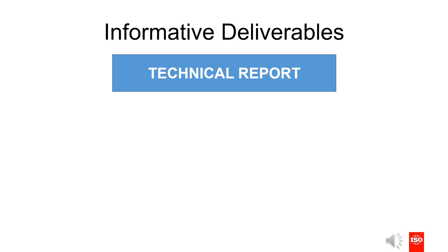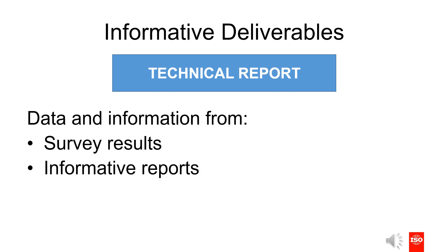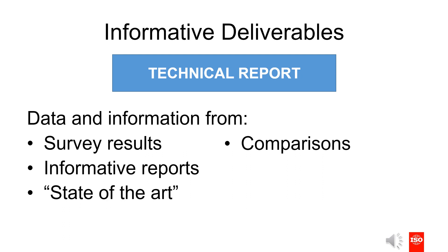Now that we have covered the various types of normative documents, we can move on to discuss the features of informative publications and technical reports in particular. Unlike the PAS, TS, and IS, technical reports contain no requirements. TRs instead contain information which may include data obtained from a survey, an informative report, or information of the perceived state-of-the-art. A technical report can also be a collection of data such as comparisons between different practices, methods, and standards, or test results.